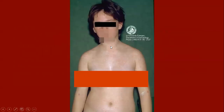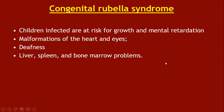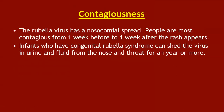Congenital rubella syndrome is the point of utmost concern. Children infected in utero are at risk of growth and mental retardation, malformation of heart and eyes, deafness, and liver, spleen, and bone marrow problems. Regarding contagiousness, rubella has a nosocomial spread; people are most contagious from one week before to one week after the rash appears. Infants with congenital rubella syndrome can shed the virus in urine and fluid from the nose and throat for a year or more.